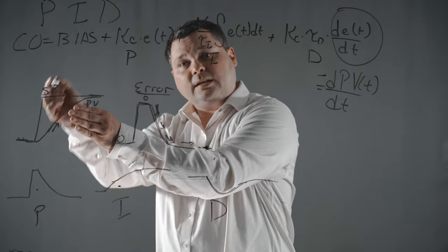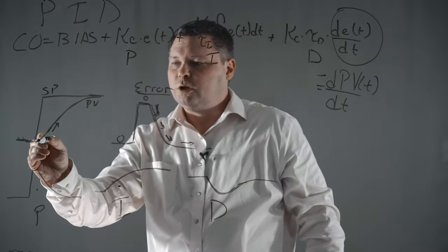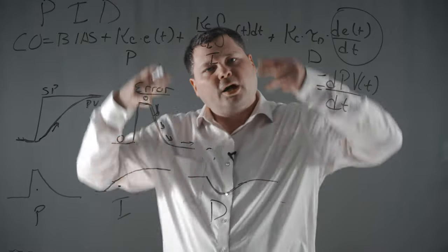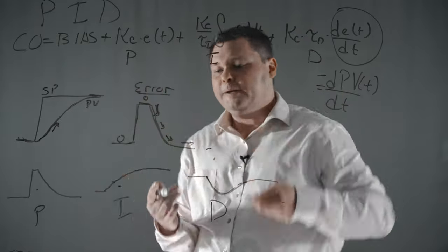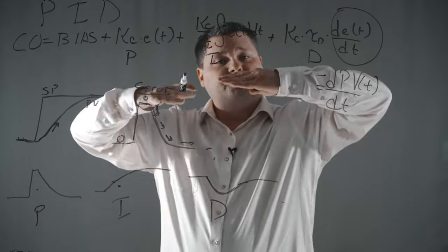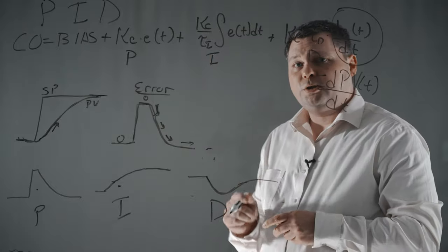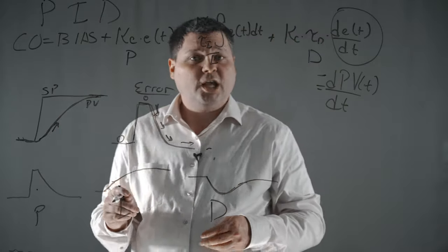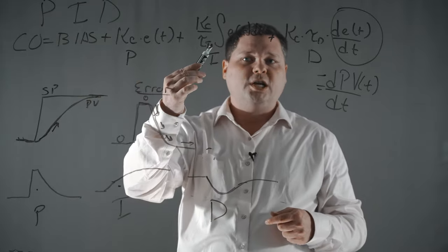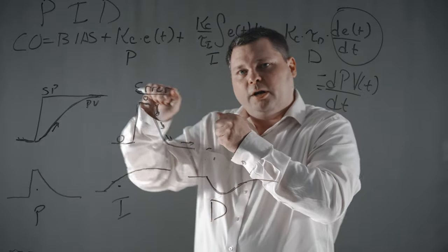Proportional provides that initial kick at the beginning to the set point change, gets that controller output moving and drives the process up. Then as my process variable gets to set point, my proportional contribution starts to pull back a little bit. The integral is starting to accumulate and shift that controller output balancing point to a new location to try to get that process variable up without any overshoot. Meanwhile, the derivative is just looking at the rate of change — it doesn't care if I'm close or far away from my target. It's just saying, 'I'm changing too much, I don't like that, so I'm going to tamp that down.' So proportional and integral push, derivative pulls back.